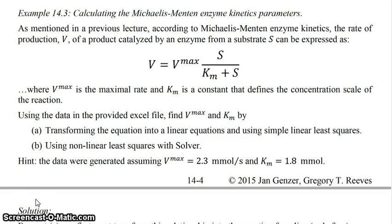In this screencast we're going to be talking about example 14.3 where we're calculating the Michaelis-Menten enzyme kinetics parameters using both linear least squares and non-linear least squares implemented through Excel's Solver. This is actually very similar to the previous example except instead of using the Arrhenius equation we're using the Michaelis-Menten enzyme kinetics equation.